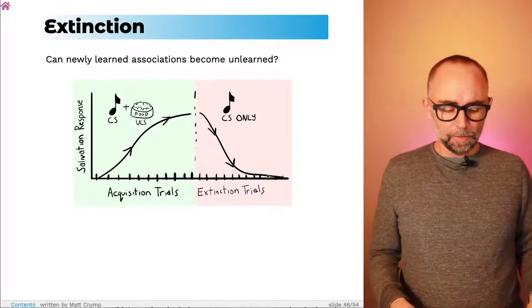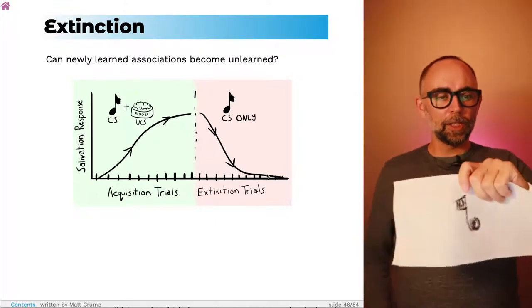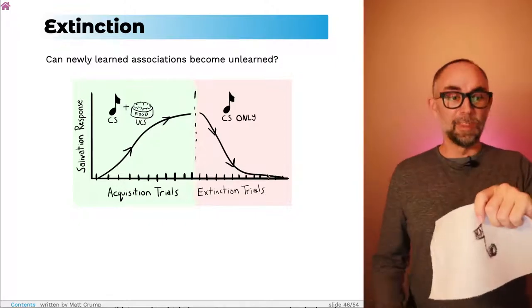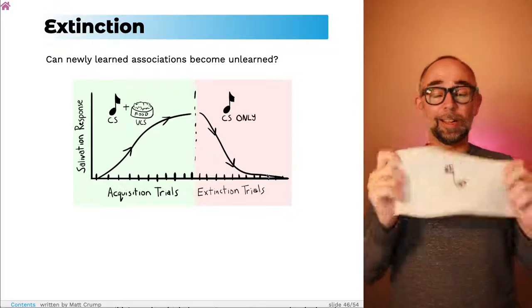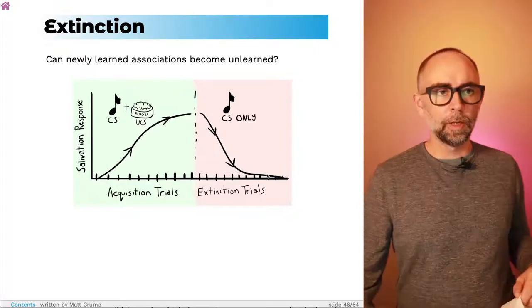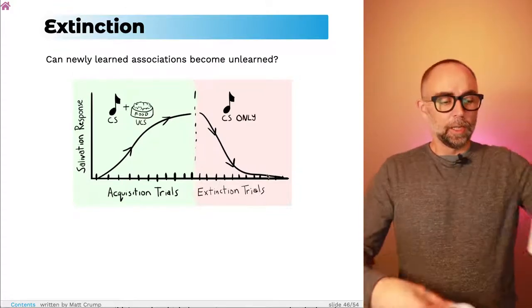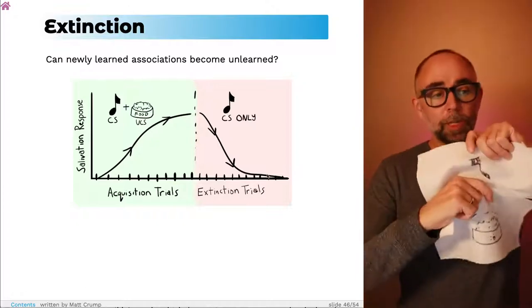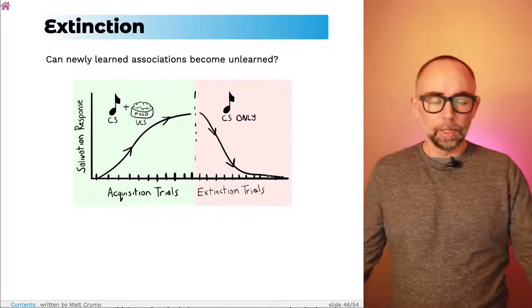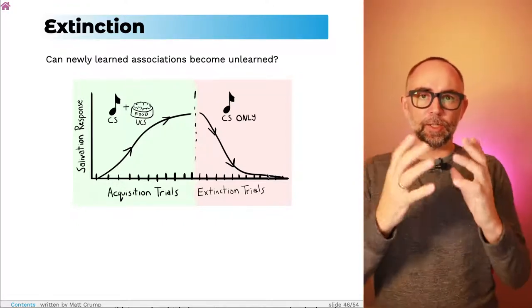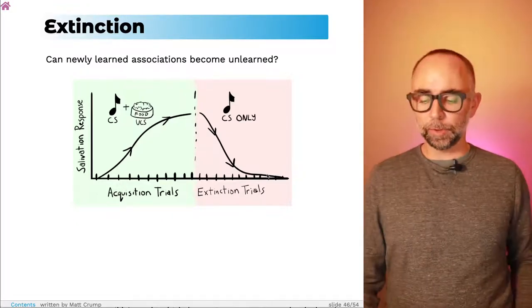That means that whenever the animal sees the tone, what kinds of associations come along with it? Nothing. This is not dragging up memories of food because it's not connected to the food association anymore. So one possibility is that during the extinction procedure, associations do become completely unlearned. And the bonds between one thing and another become torn apart, just like a string would be cut or these two paper towels would be pulled apart.